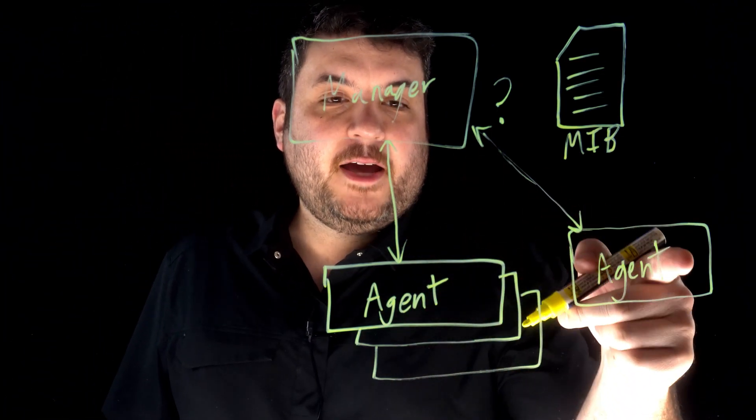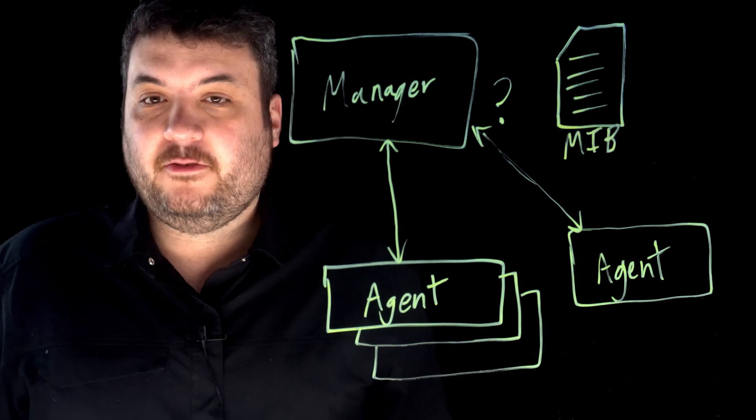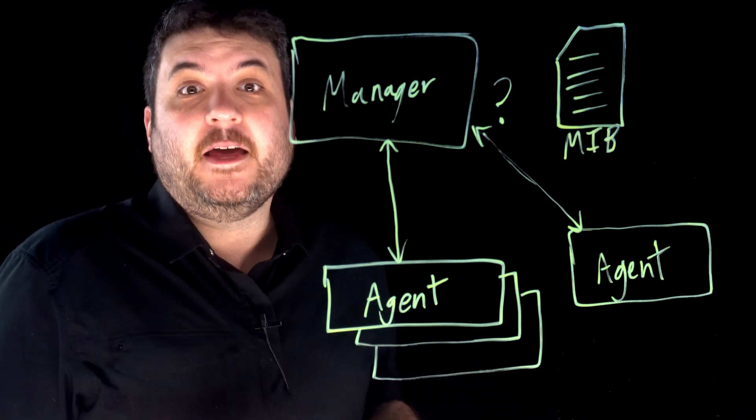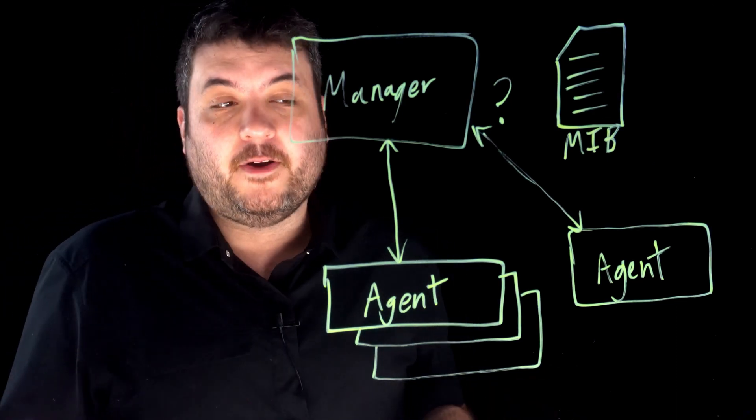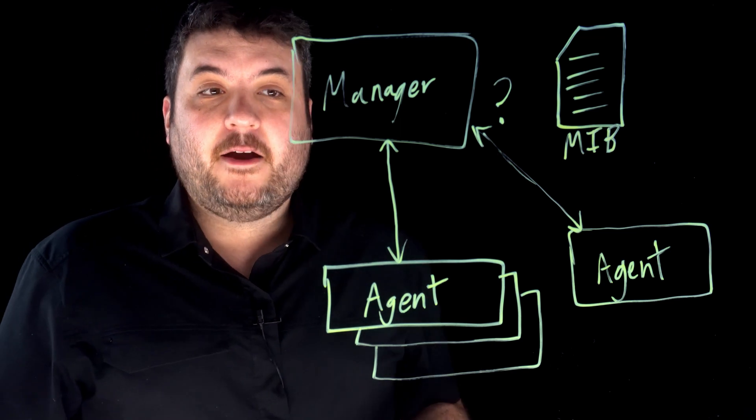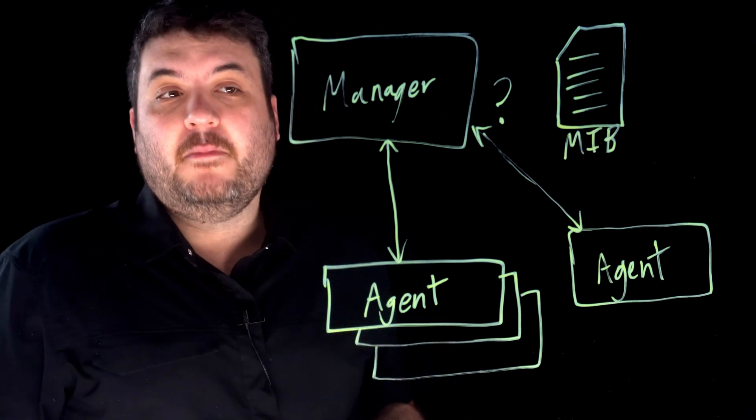So the MIB should be provided by the manufacturer of your agent. It's just like a driver file. If you bought something, that device's manufacturer should give you a driver file. Well, the supplier of your SNMP agent ought to give you a MIB.